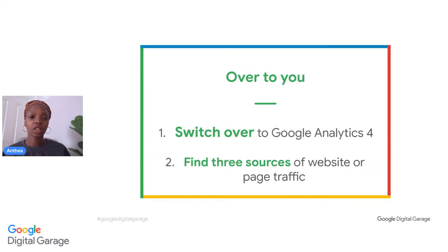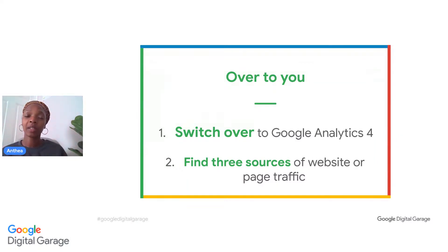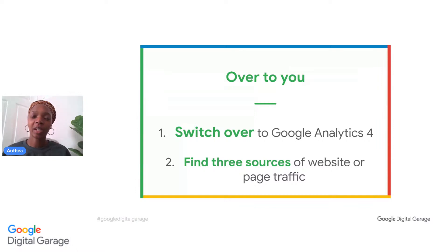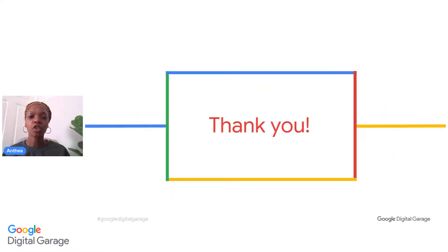We've come to the end of this session. I hope you found it useful and can see the value in how you track traffic within Google Analytics. Two things we really need you to do now: first, switch over to Google Analytics 4 — if you've got an analytics account, just go there and there should be an option for you to upgrade. Then think about three sources of website or page traffic that will help you to understand and search for a report on Analytics to give you useful information. If you have enjoyed this session, please do give us feedback — Samantha's put a link into the chat. Check out our other webinars and join those for any subjects that you feel might be useful. Thanks again for joining us and have a great day.